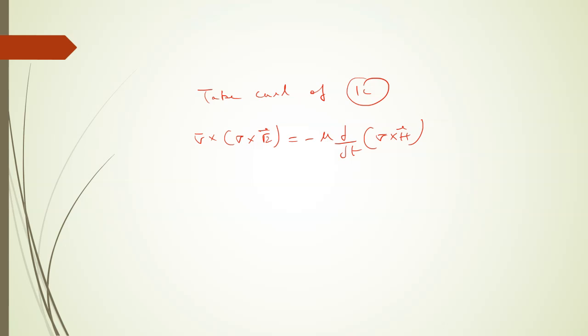The left hand side will become del del dot E minus del square E equals minus mu d by dt del cross H.